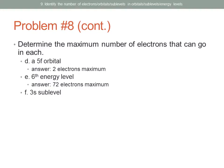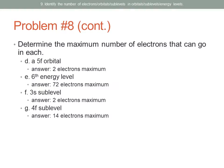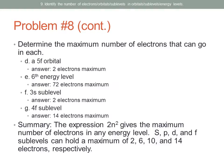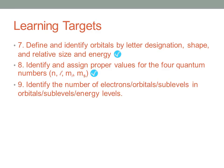The 3S sublevel: it is an S sublevel, so it has just one orbital — maximum of two electrons. The 4F sublevel: F sublevels contain seven orbitals, so seven times two is 14 electrons. To summarize: the expression 2N squared gives the maximum number of electrons in any energy level, and S, P, D, and F sublevels can hold a maximum of 2, 6, 10, and 14 electrons respectively. That is the end of the problems — we have hit all the learning targets.